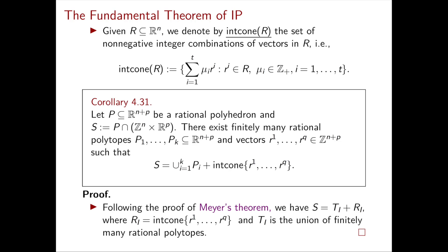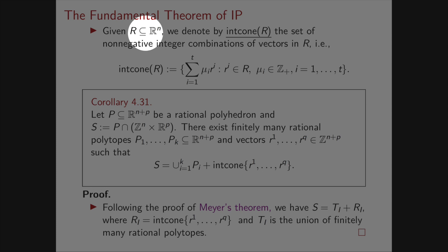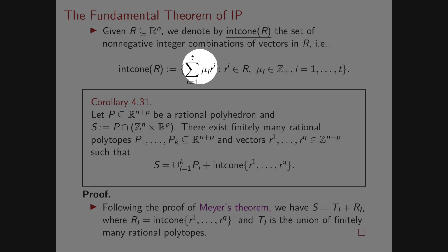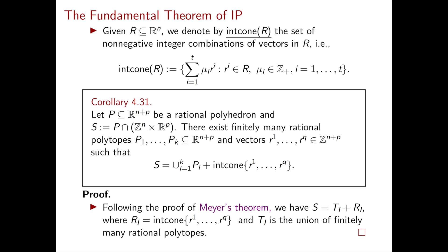In the proof of Meyer's theorem, we used the integer cone — an integer combination of a bunch of vectors. We introduce notation: given a set of vectors capital R, we denote by int.cone(R) (the integer cone of R) the set of combinations of vectors r_i in capital R with non-negative integer coefficients. We can then write the following corollary, which we'll use later for a representability result.